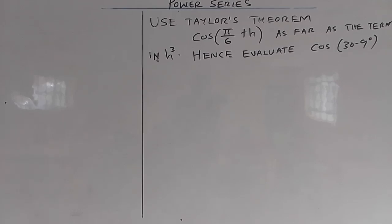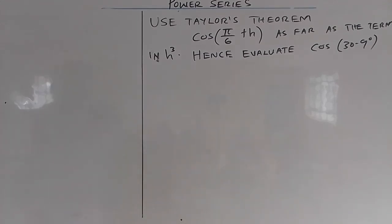In this next example, use Taylor's theorem to expand cos(π/6 + h) as far as the term in h cubed, hence evaluate cos 30.9 degrees.